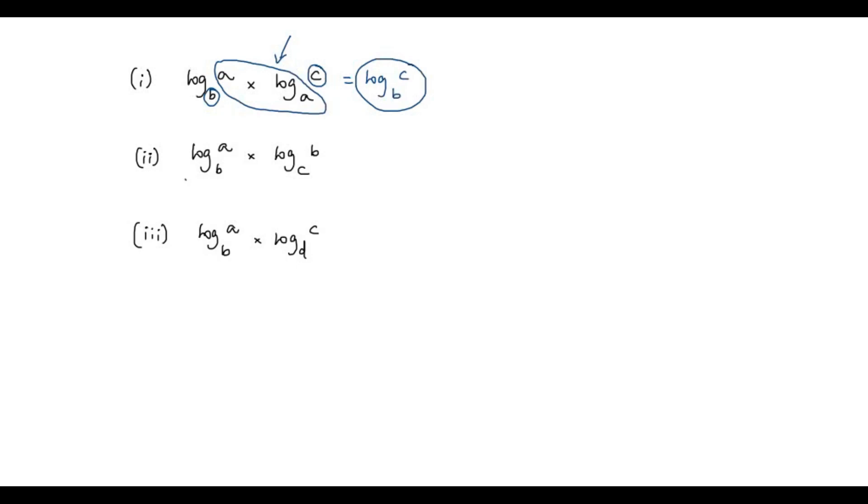So the product of two logarithms — log A to the base B and log C to the base A — is equal to log C to the base B. Let us look at the second example.